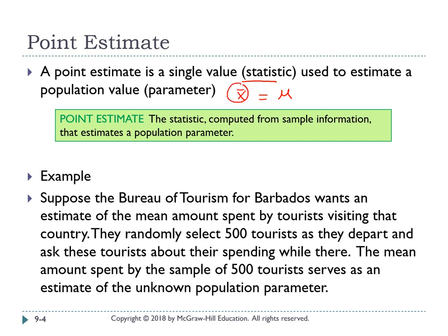For example, suppose the Bureau of Tourism for Barbados wants an estimate of the mean amount spent by tourists. They randomly selected 500 tourists as they depart and asked about their spending. The mean amount spent by the sample of 500 will serve as the estimate for the unknown population parameter — that is, your sample mean serves as the estimate for mu when you don't know the population.